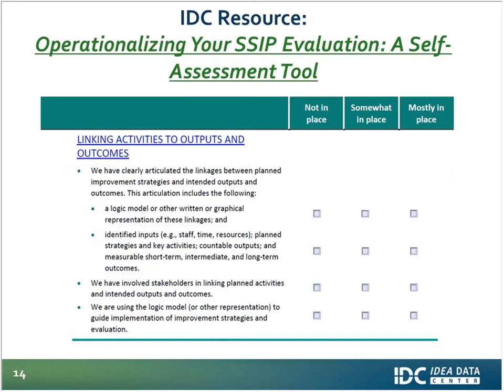Another resource that can help you reflect on what elements you have in place for your SSIP evaluation — including how you're linking activities to outcomes — is the self-assessment tool called 'Operationalizing Your SSIP Evaluation.' This is an interactive rubric that we've used with states, or that states have used independently, to identify gaps and inform specific actions they can take moving forward — for example, whether they need to identify long-term outcomes or link those outcomes to progress indicators.